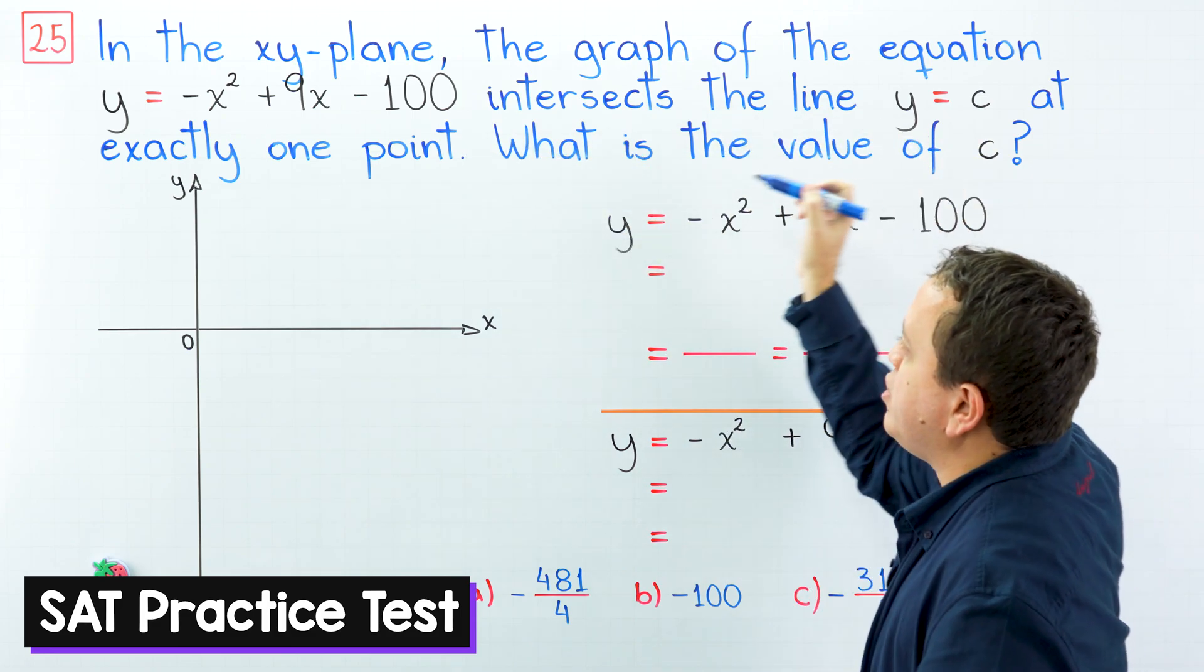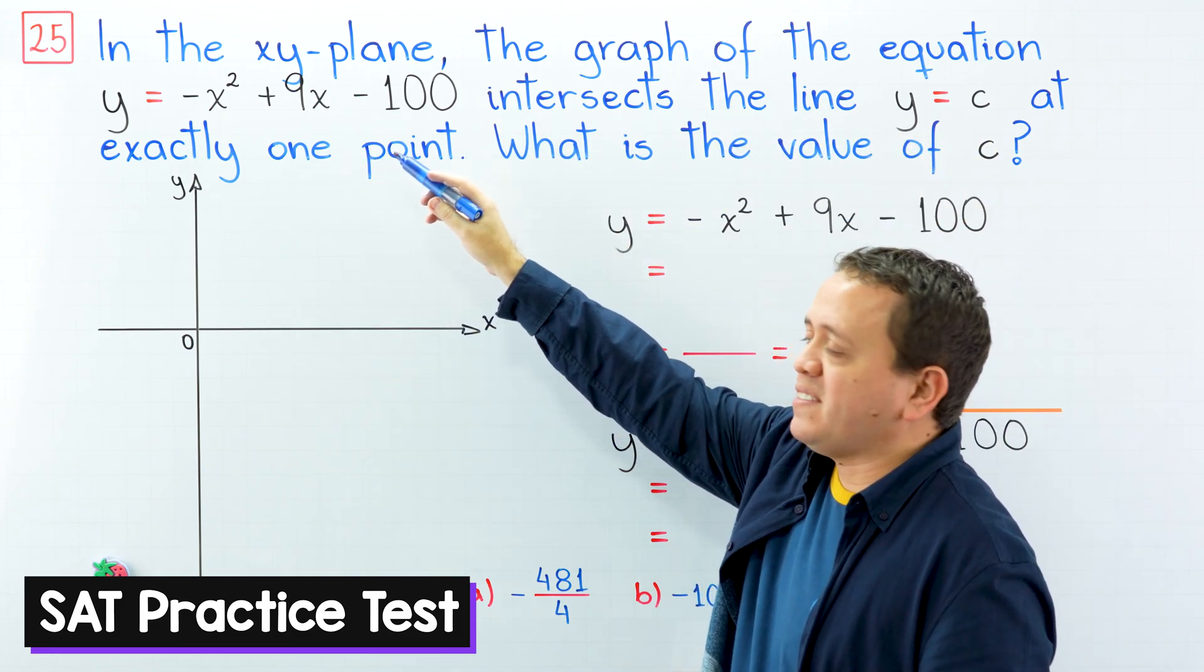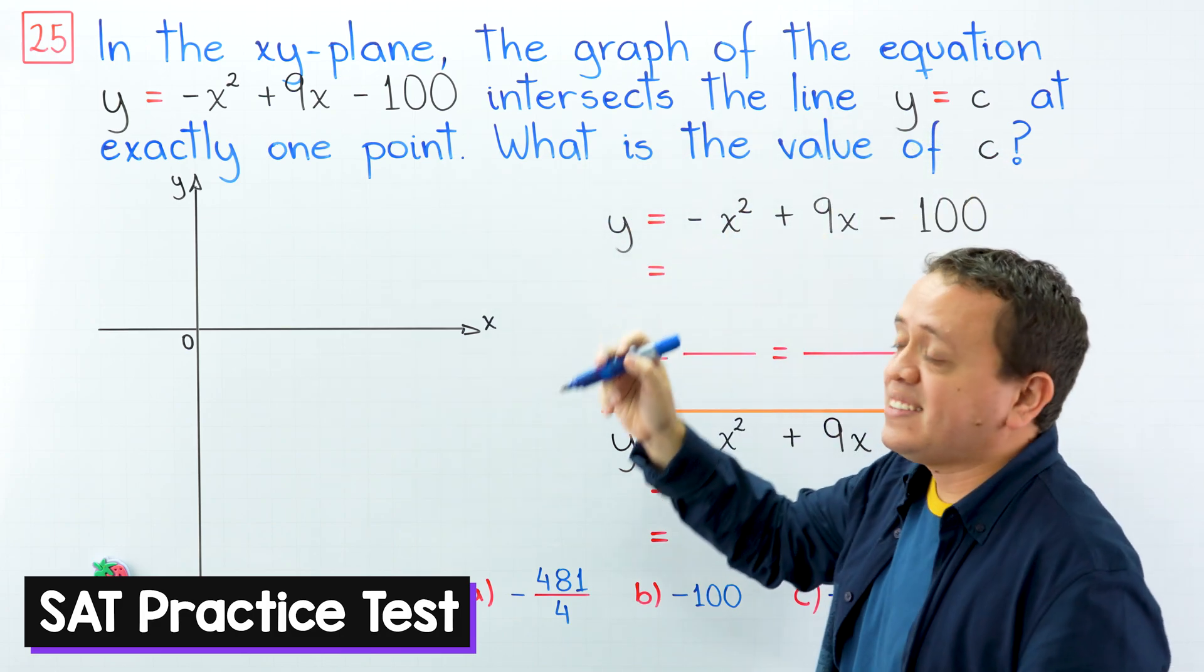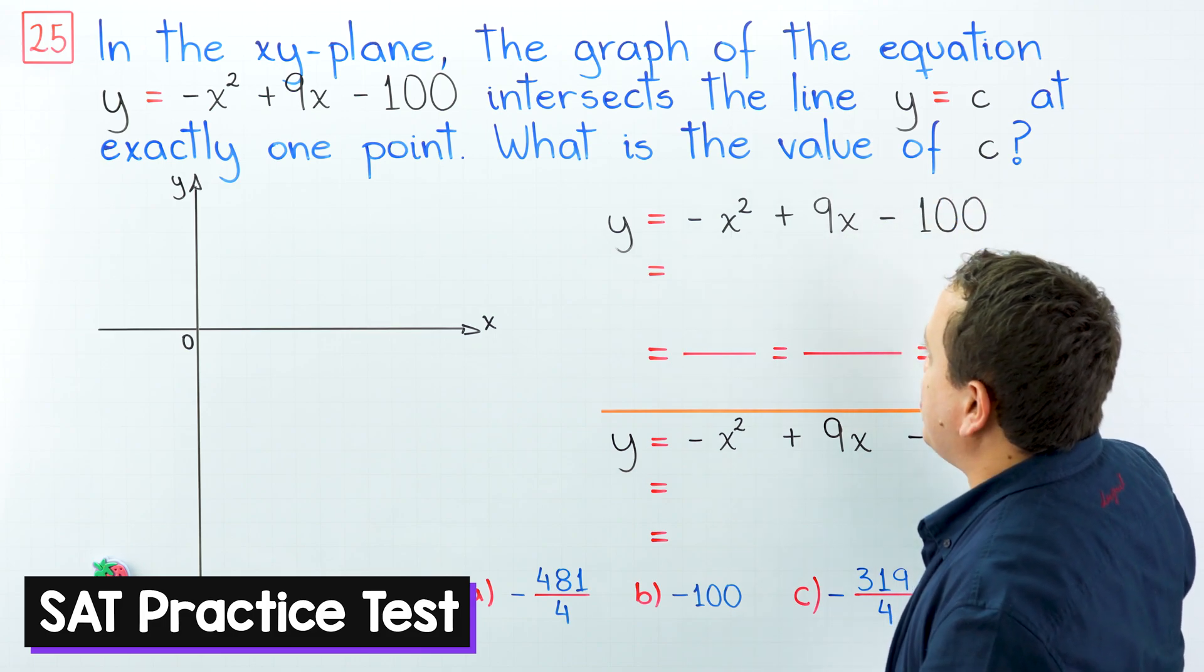In the x-y plane, the graph of the equation y = -x² + 9x - 100 intersects the line y = c at exactly one point. Here comes the question. What is the value of c?